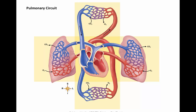The pulmonary circulatory route begins at the right ventricle, which has been filled with deoxygenated blood from the right atrium. The right ventricle pumps the deoxygenated blood into the pulmonary trunk, which then branches into the right and left pulmonary arteries. The pulmonary arteries branch into smaller arteries and then into arterioles, which lead into the capillary beds within the lungs.